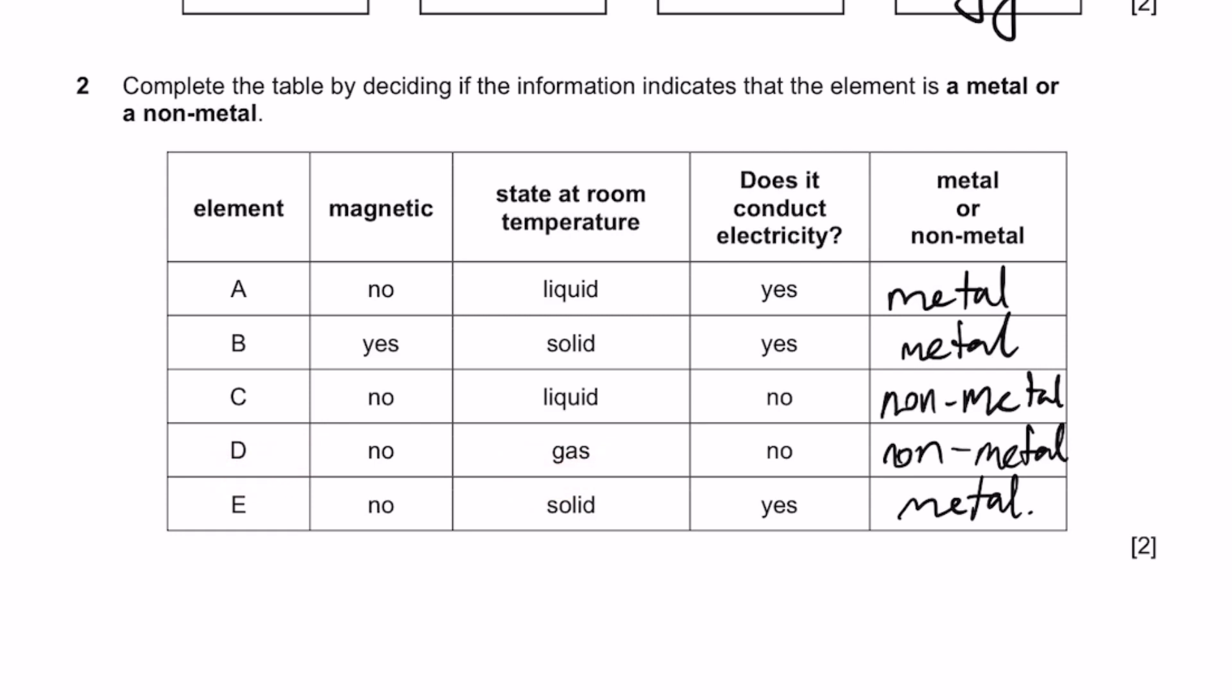Does it conduct electricity? A, B, and E conduct electricity, while C and D do not. If the state of an object or substance is solid at room temperature, most likely it is a metal. If it conducts electricity, yes, it's a metal. The two substances which are solid at room temperature conduct electricity, so both of them are metals.